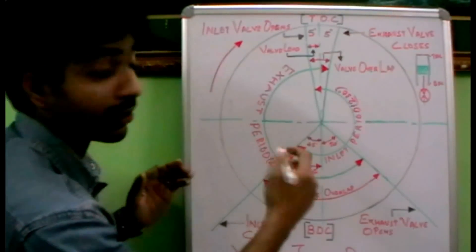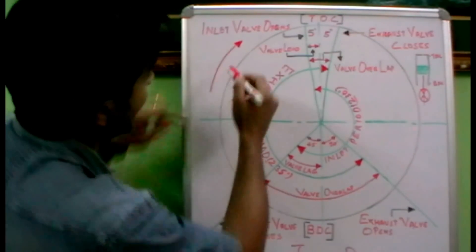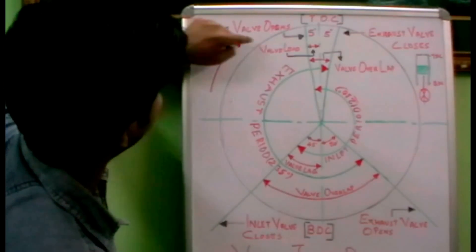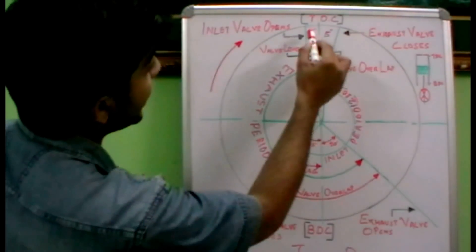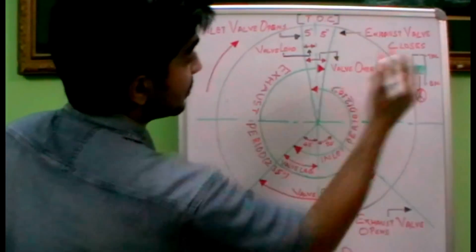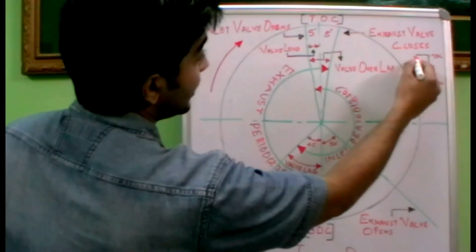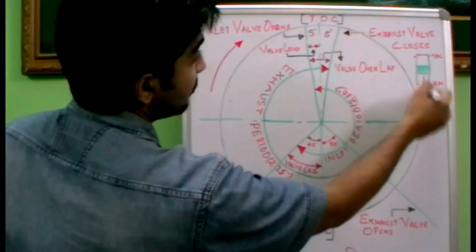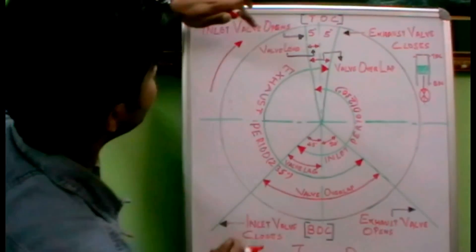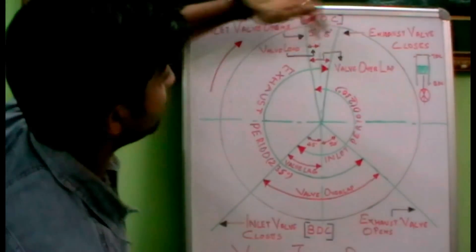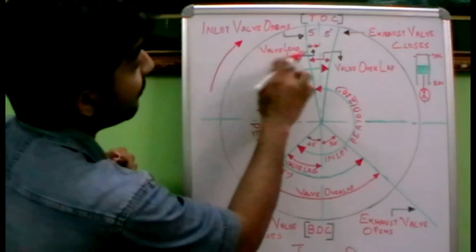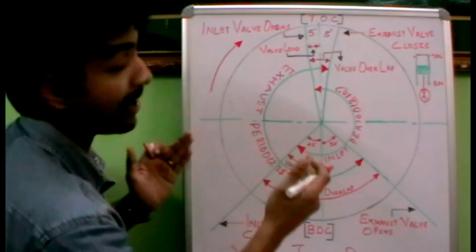The crankshaft is rotating in a clockwise direction, as shown by the arrow. The inlet valve opens 5 degrees before top dead center — that means before the piston reaches the top dead center, 5 degrees before the crankshaft rotation reaches the top dead center, the inlet valve opens. Since it opens 5 degrees early, there is a lead for the inlet valve opening, and that 5 degrees is called the valve lead.